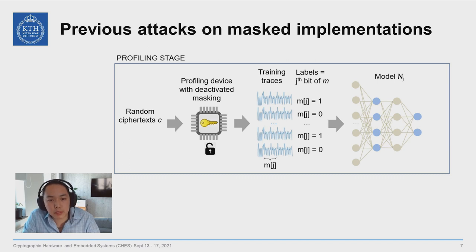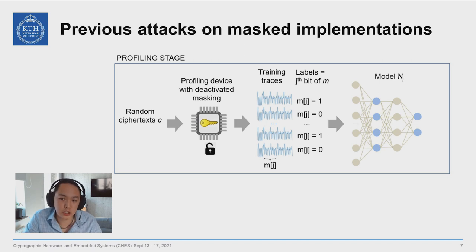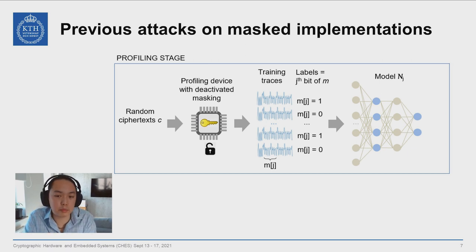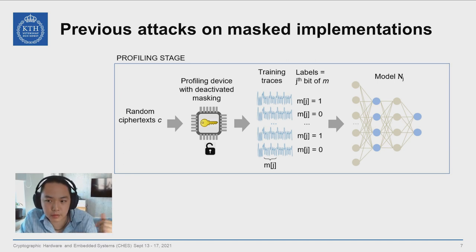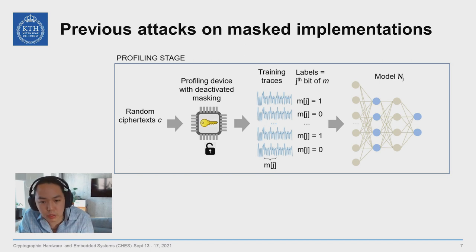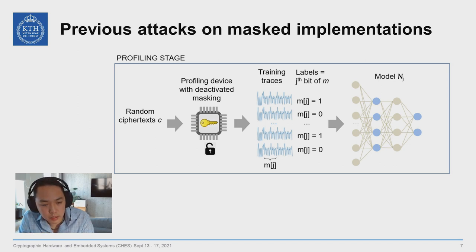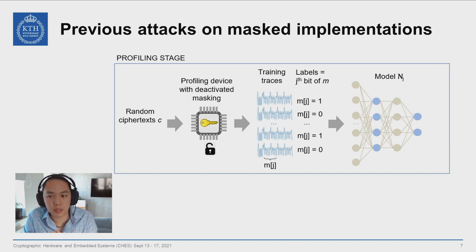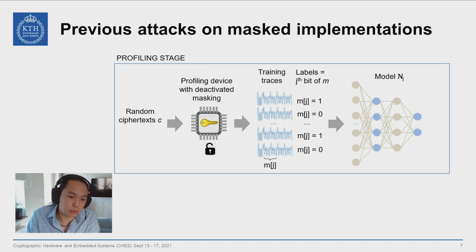Previous methods require fixing or modifying the mask to profile, which generally removes the ability to profile on the device under attack. There are usually measures in place to prevent reflashing — reflashing would erase the key or otherwise render the secret key storage inaccessible. This gives our method an advantage, because we can train on the exact device under attack, which largely removes device and process variations that would come from having to profile on a cloned device.